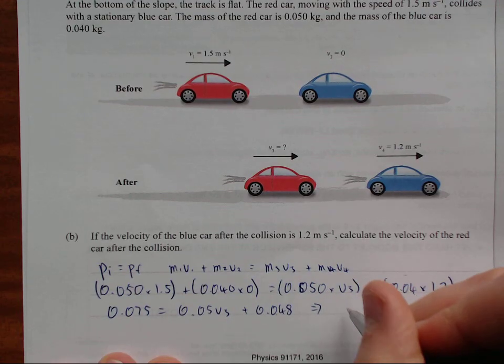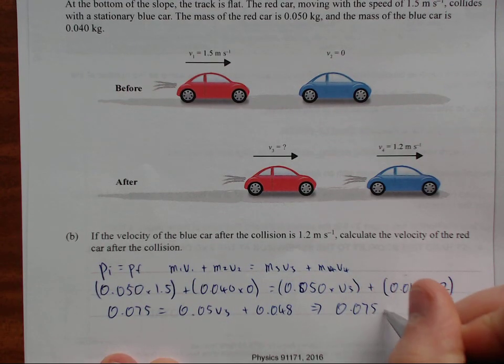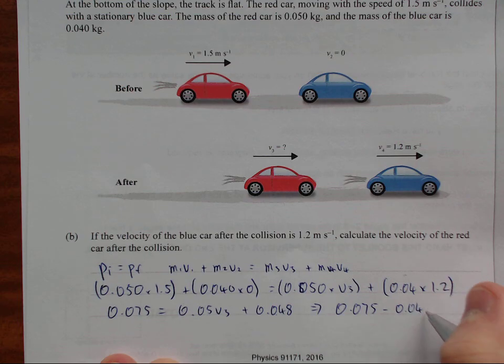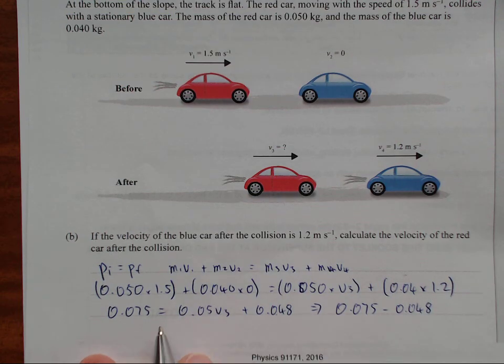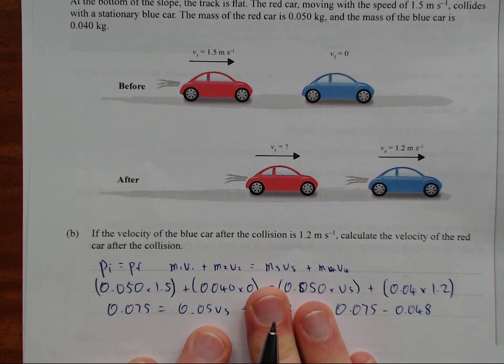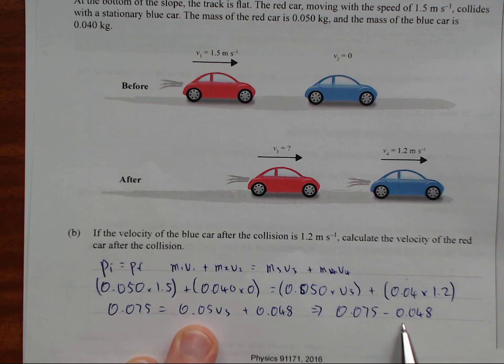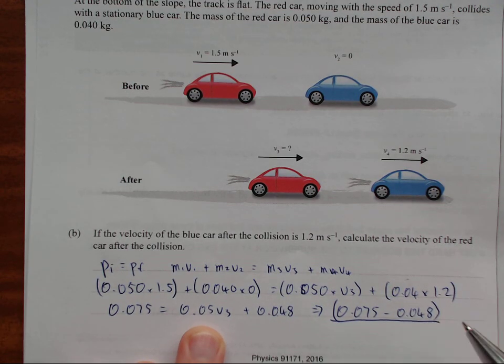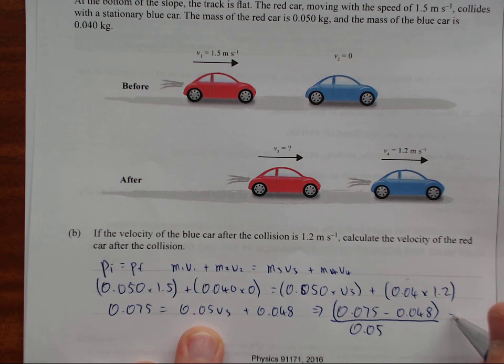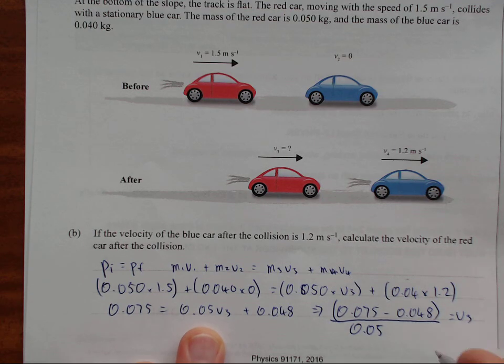Once I rearrange that, I'll get 0.075 minus 0.048, and then I've moved that over to this side by subtracting it, and now I'm going to divide. So then I need to divide both sides by 0.05. If you plug that into your calculator, V3 equals 0.54 meters per second.